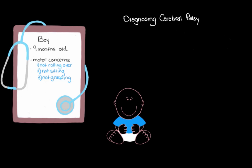At nine months old, our child should be able to do all of these things. The fact that he hasn't reached these developmental milestones suggests that his motor development is delayed for some reason. This scenario — where parents first notice their child isn't meeting key motor milestones and bring it up at a doctor's visit — is often how cerebral palsy is first clued in on.